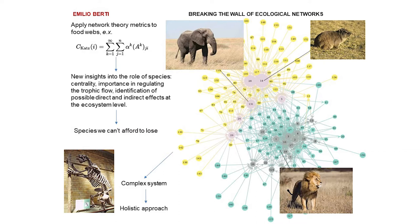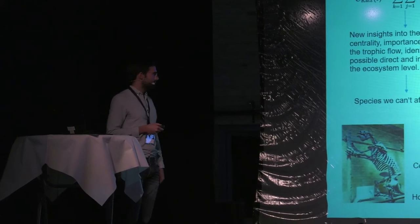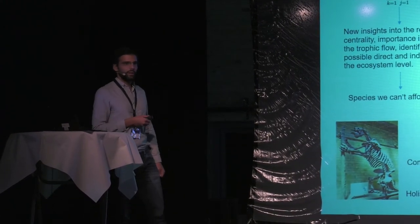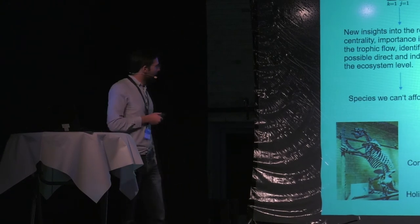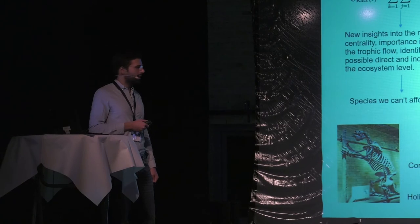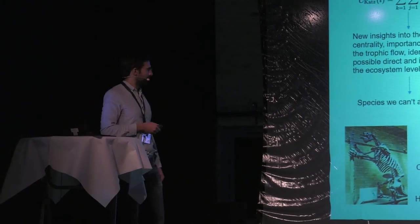So this is just an example of the new kind of information that we can access through network theory. And finally, I will finish my time with a consideration, which is that food webs are complex systems, and to study complex systems we need a holistic approach. Network theory is conveniently a holistic approach that can help us in slowing down the current extinction rate and preserve the decline in biodiversity.